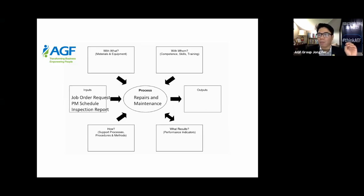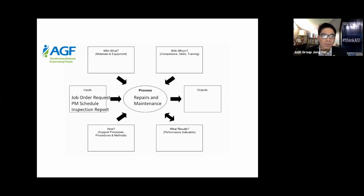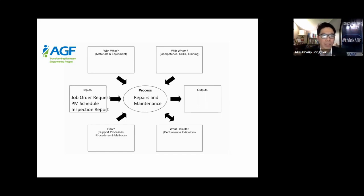The PM schedule is an input because vehicles and equipment have a periodic maintenance schedule we need to watch. An inspection report submitted to the supervisor can also be an input. Participants in the chat suggest: request for service, request for repair — fantastic examples. These are trigger points that initiate execution of the procedure.